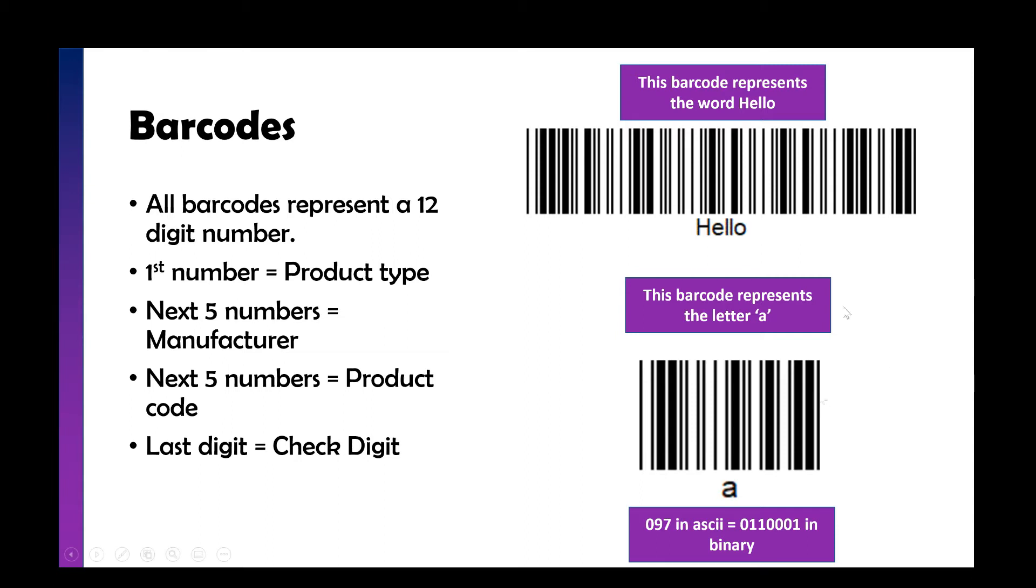So my two examples here, we've got hello. So H-E-L-L-O, which will be a series of binary strings or binary numbers from the ASCII table. And then this one here is a lot shorter because it's just representing the number 97 or 0110001 in binary, because that is lowercase A.